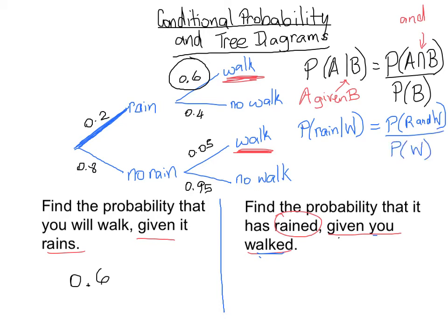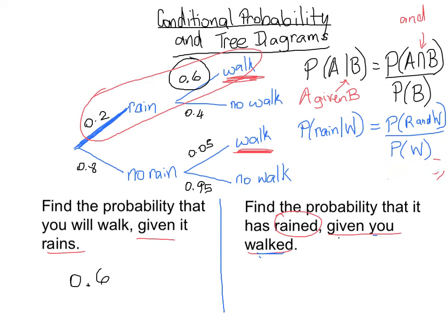Rain and walk we already know from the last section. Rain and walk is 0.2 times 0.6, so at the top of our fraction it's 0.2 times 0.6. The probability of rain and walk equals 0.2 times 0.6.